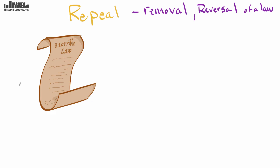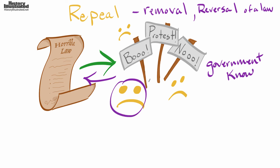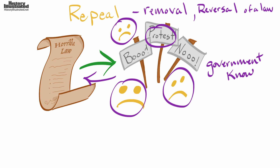Let me go ahead and illustrate that for you. Let's say we have a law — it's pretty horrible. The reason it might be removed or reversed is because it draws a lot of protest. People are letting the government know, through sad faces and protests, that they are unhappy. They think the law is horrible and that it needs to be removed or reversed. So repeal is what happens when a government decides to reverse or remove a law from the books.